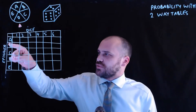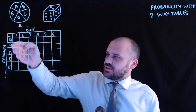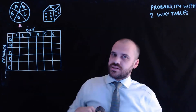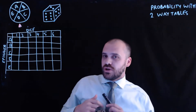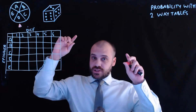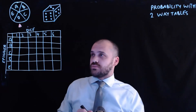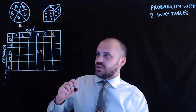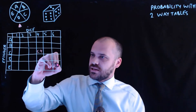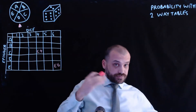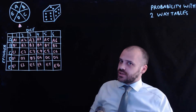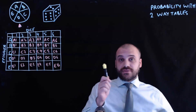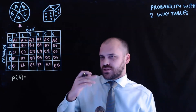Here's my two-way table. I've put all of the things that the spinner can do down the side, and all of the things that the dice can do along the top — A to E on one side, one to six on the other. Each square in the two-way table represents an outcome when I spin and roll at the same time. For instance, this is C and four, and this one here is E and six. I can fill them all in, and now we can start calculating probabilities.